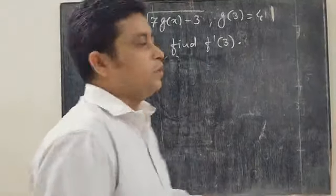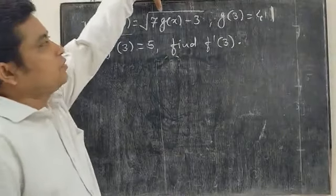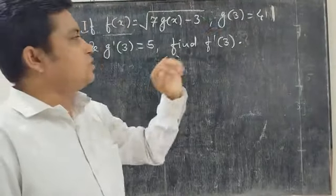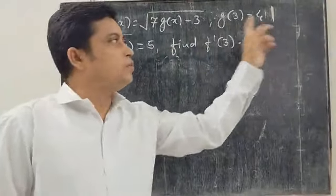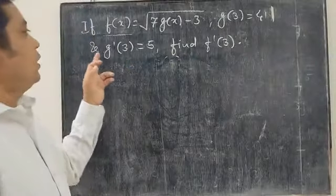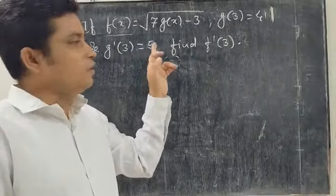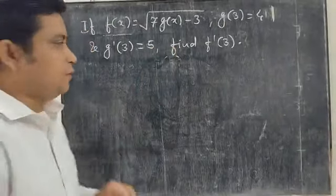Today we discuss a problem: if f of x is equal to the square root of 7g(x) minus 3, when g(3) is equal to 4 and g dash of 3 is equal to 5 is given, find f dash of 3.